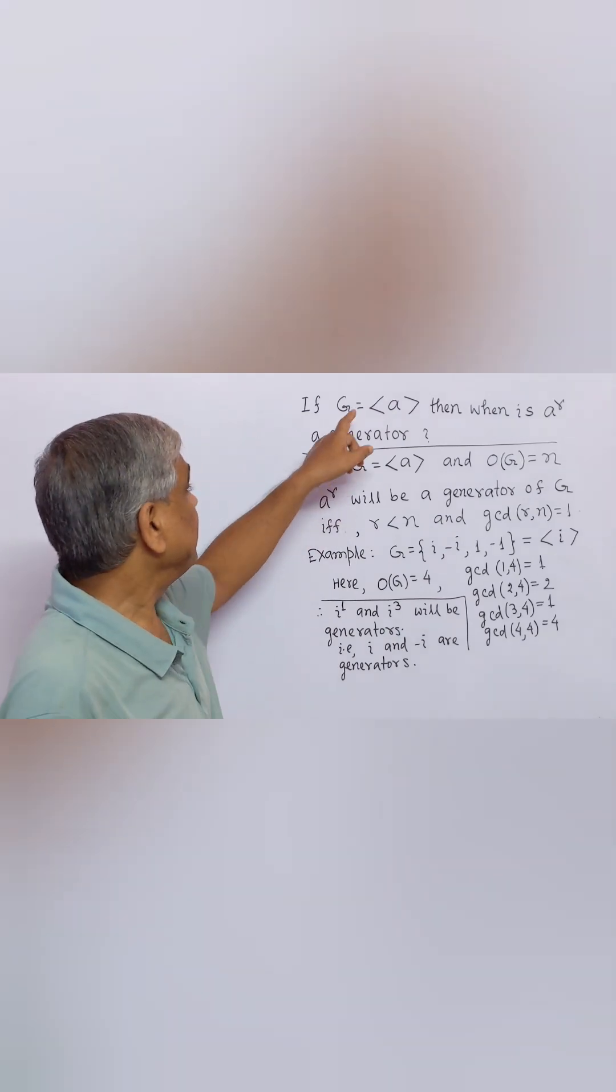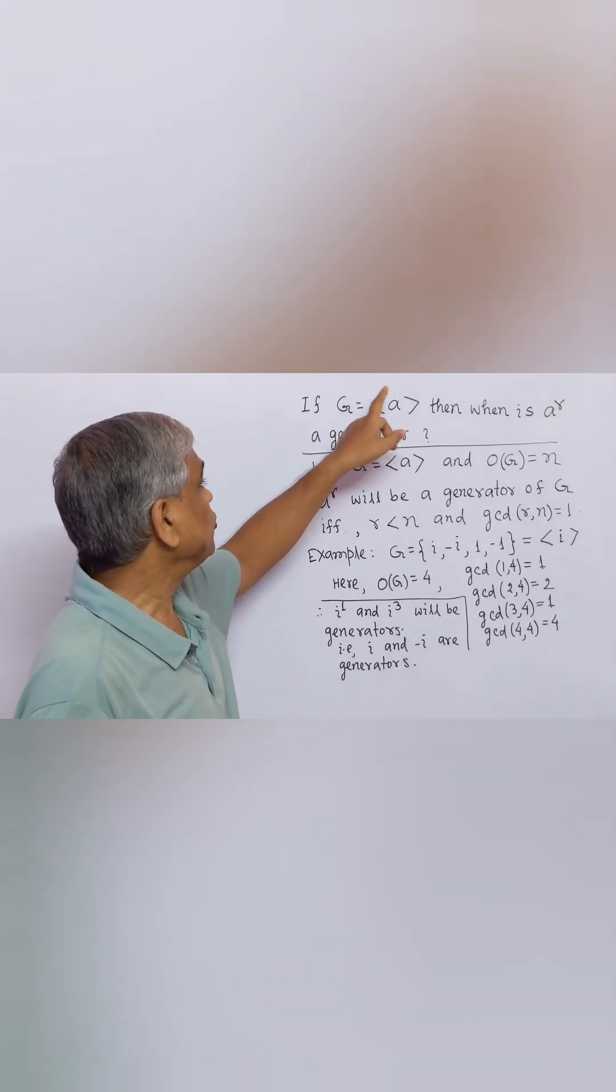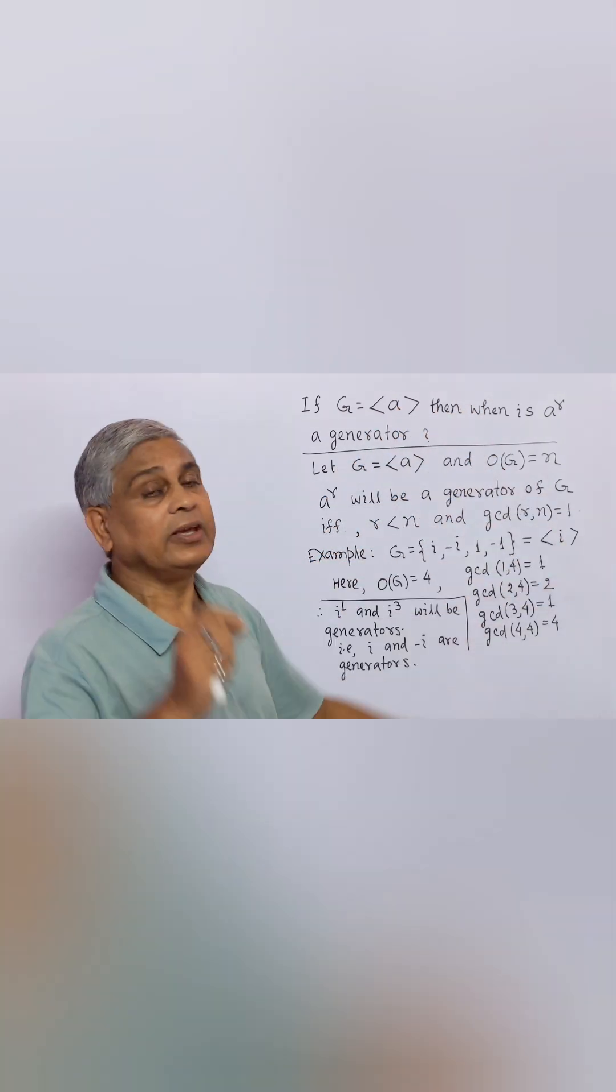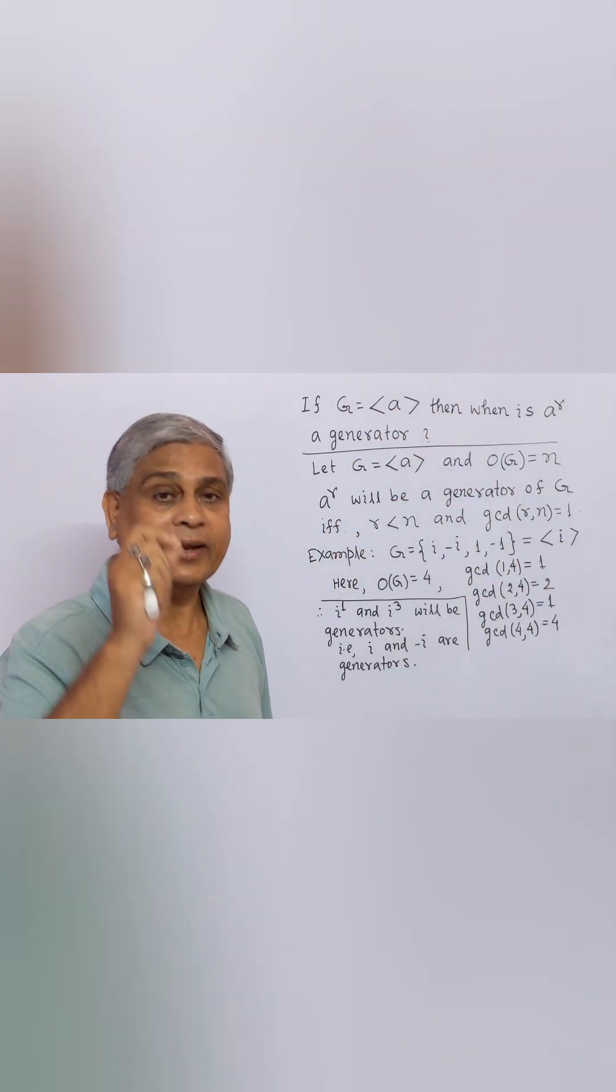Now, question is, if G be a cyclic group generated by an element A, then when is A to the power R a generator?